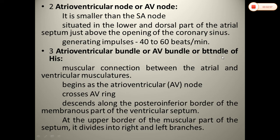The Bundle of His forms the muscular connection between the atrial and ventricular musculature. It starts from the AV node, crosses the AV ring, and runs along the posterior and inferior border of the membranous part of the ventricular septum. At the upper border of the muscular part of the septum, it divides into the right and left bundle branches.